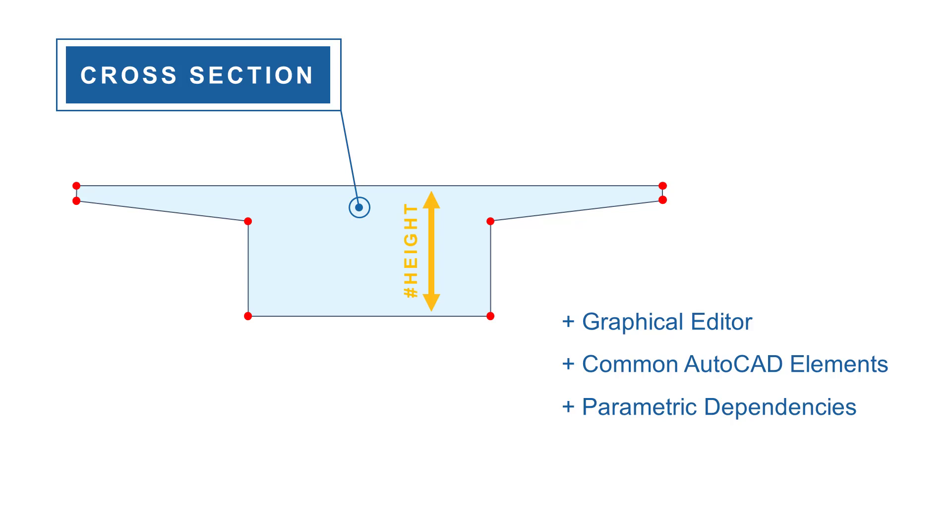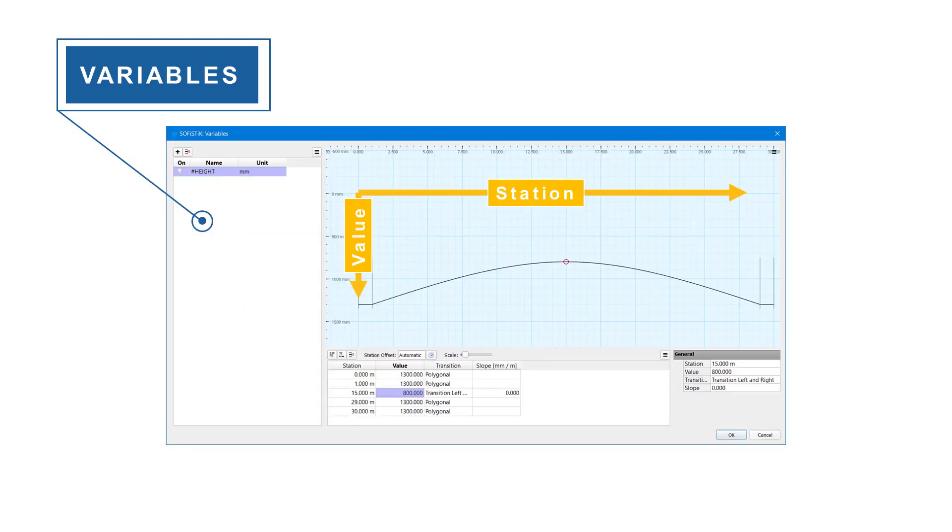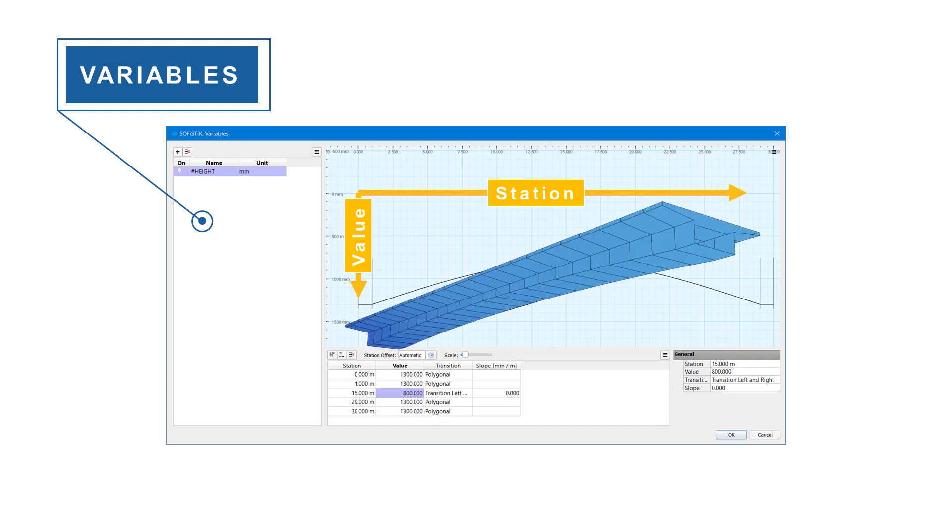Besides the ability to create any cross-section geometry using common AutoCAD elements, the editor also comes with parametric dependencies. These dependencies can be controlled by variables which are referenced to the geometric axis and its stations. The interaction between the axis and variable drives the cross-section interpolation, which creates the required cross-section along the axis to get the final model.